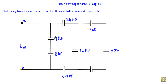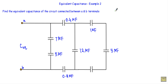We have a total of eight capacitors connected in this circuit, and we will reduce all these capacitors to a single equivalent capacitance C equivalent. Before showing you the example, let me talk about how we calculate equivalent capacitance.